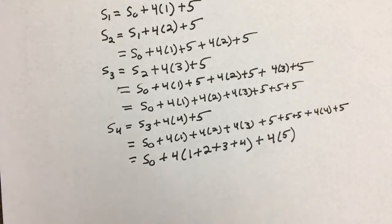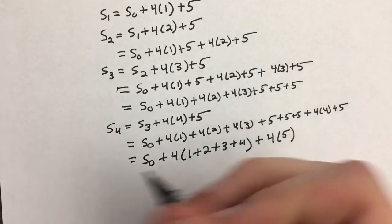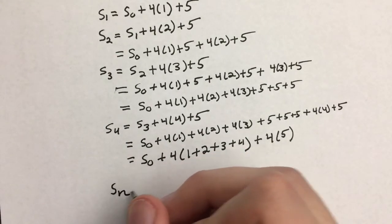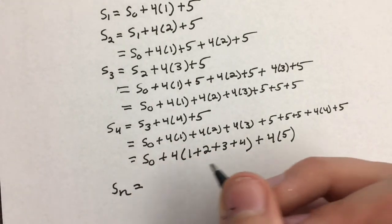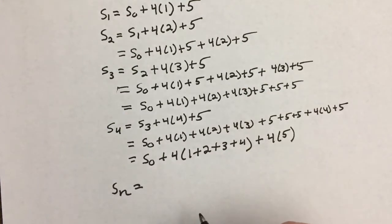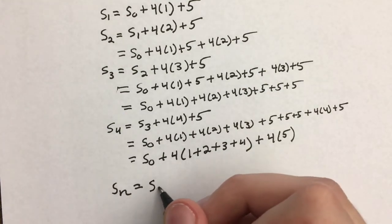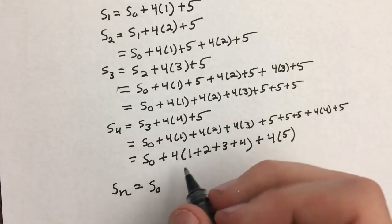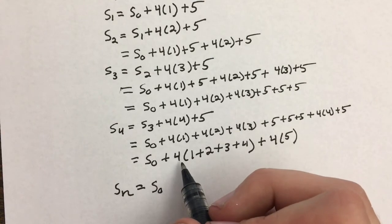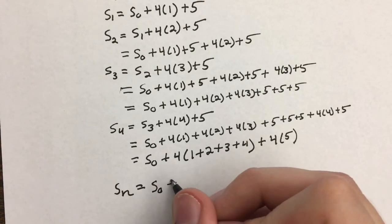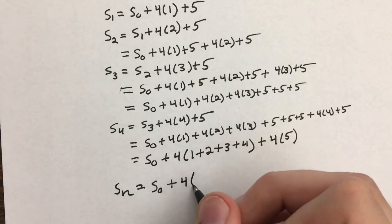And so what we want to do here is see if we can guess a term for S sub n. Well, everything so far has had an S sub 0 in it, so we're going to assume our initial condition's in here. And then everyone has also had this 4, so this is plus 4 times...